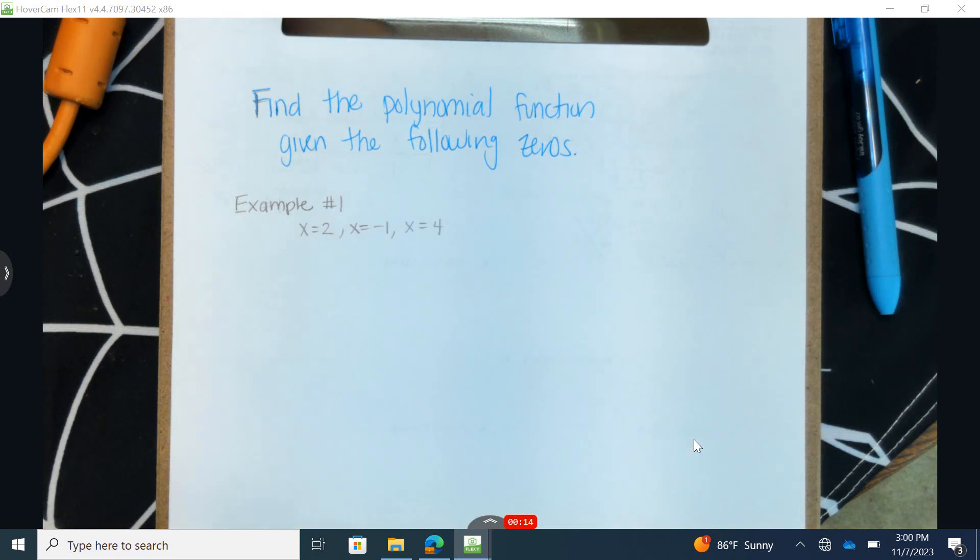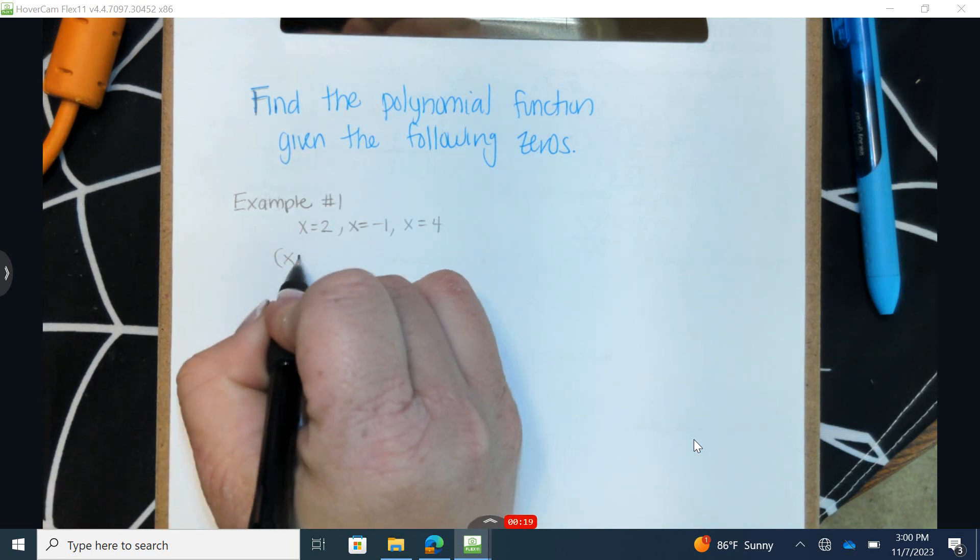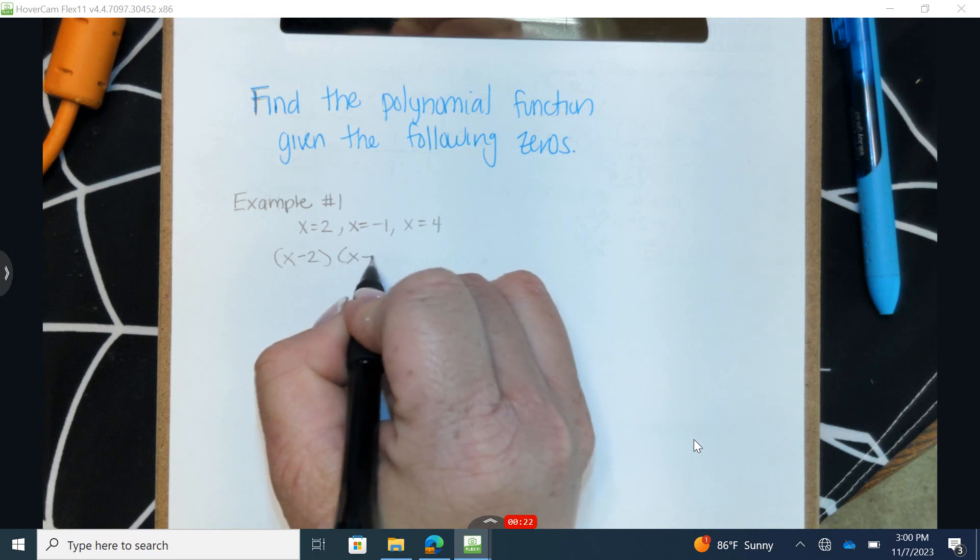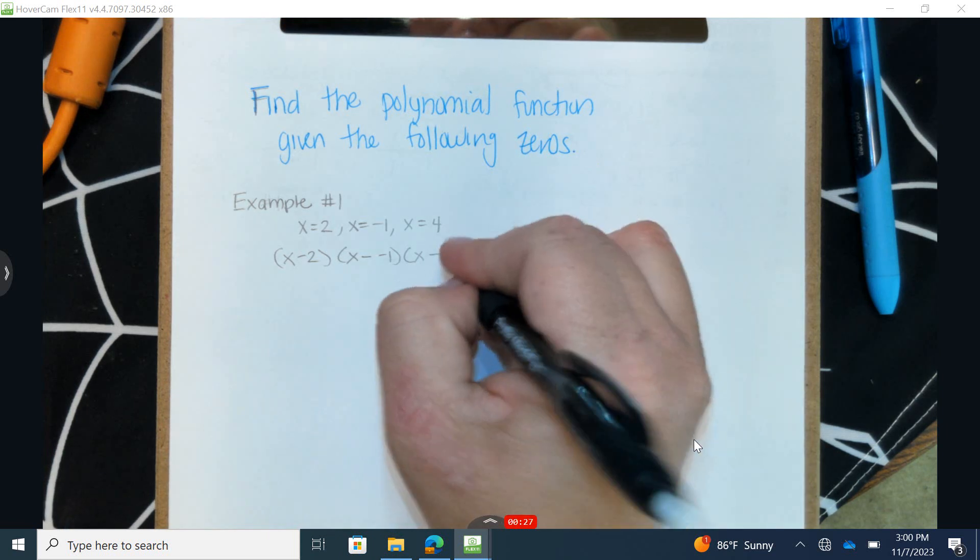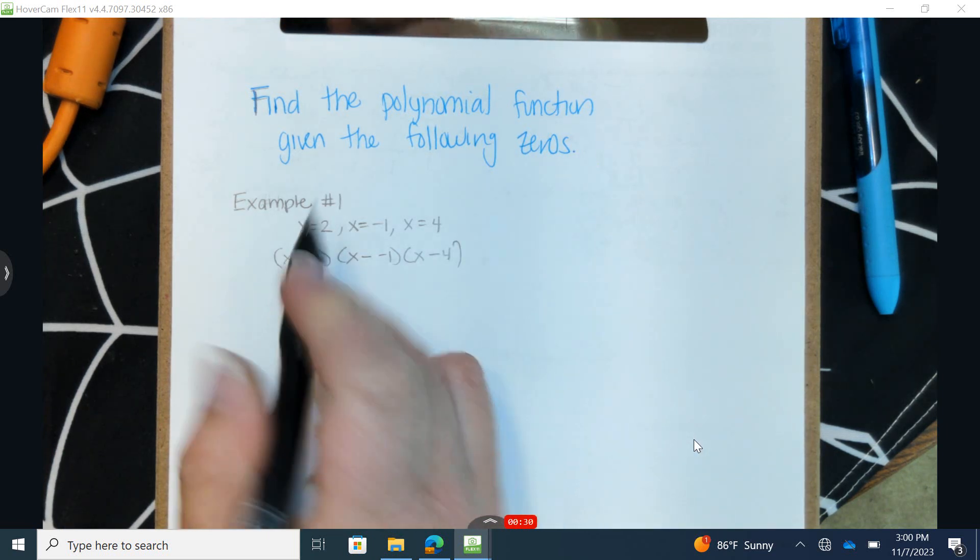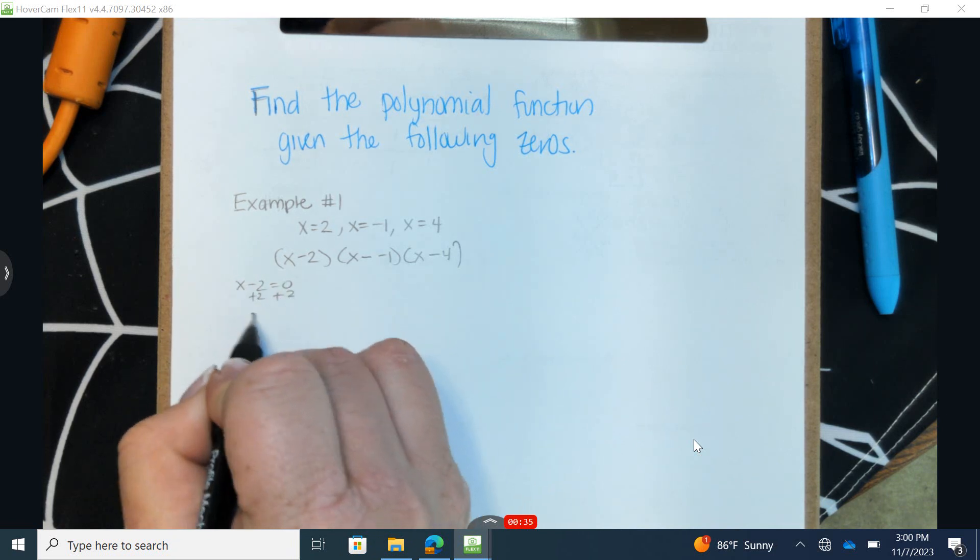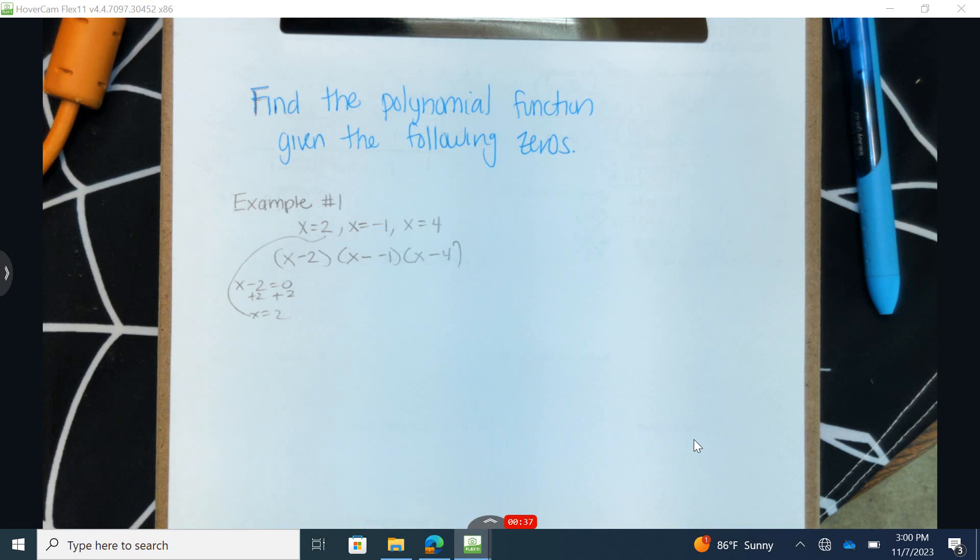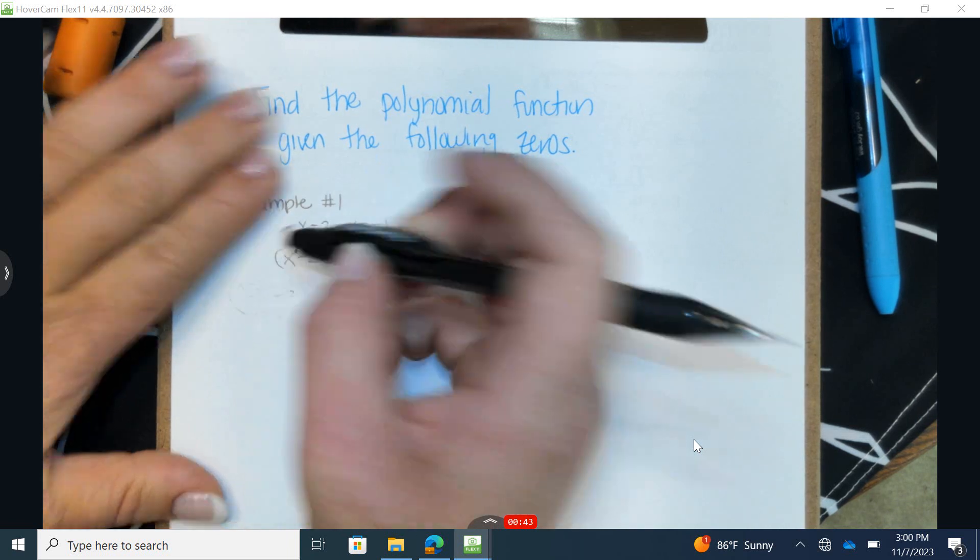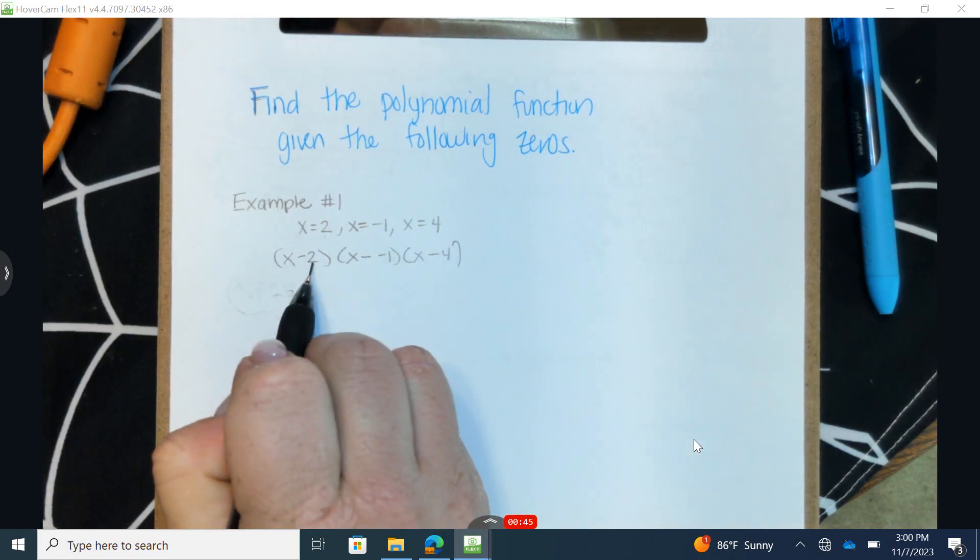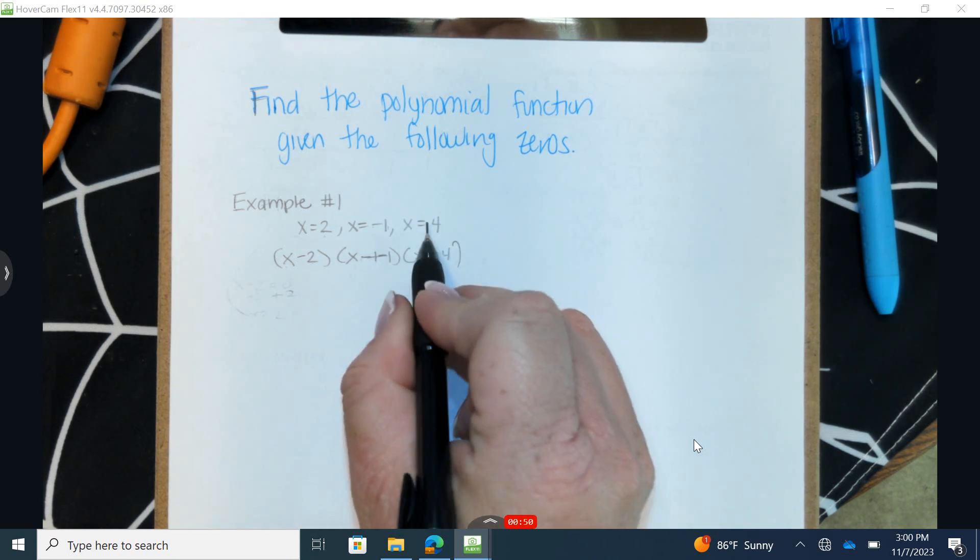Now let's come up with a polynomial that contains these. I'm going to write down three factors: x minus 2, x minus negative 1, and x minus 4. Why do we do that? Because if I solved this factor, I would come up with an answer of 2. So in order to achieve factored form, we're going to write x subtract each one of these. So x subtract 2, x subtract a negative 1, which becomes x plus 1, and x subtract 4.